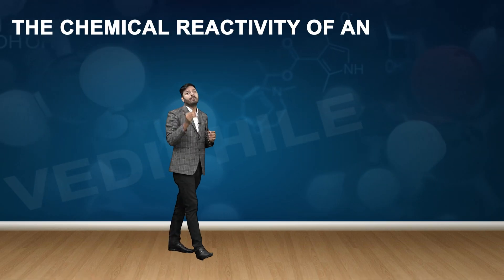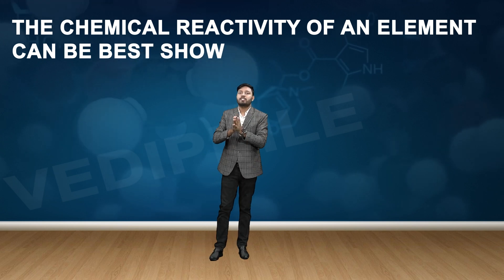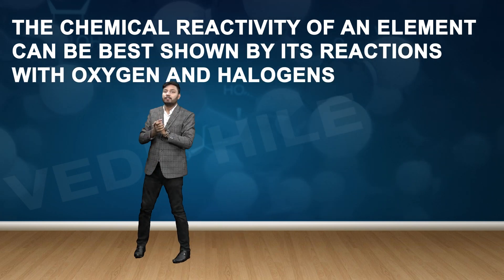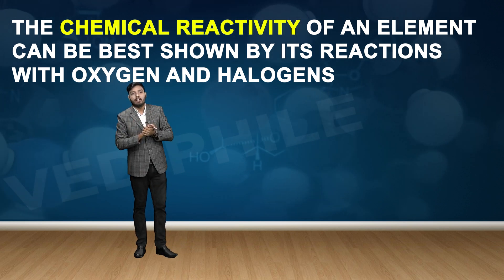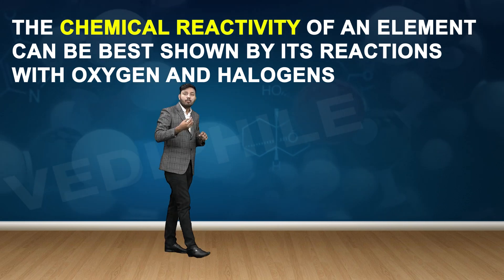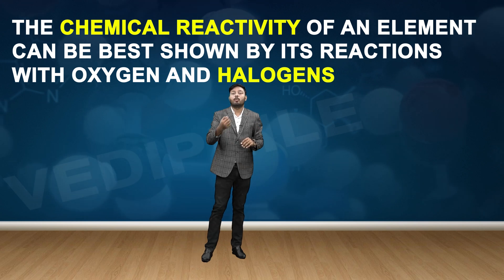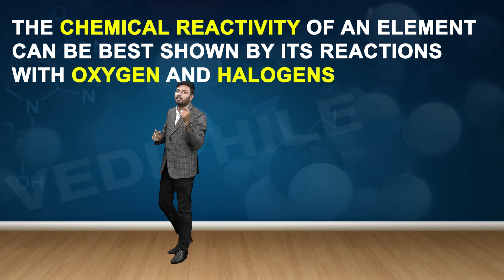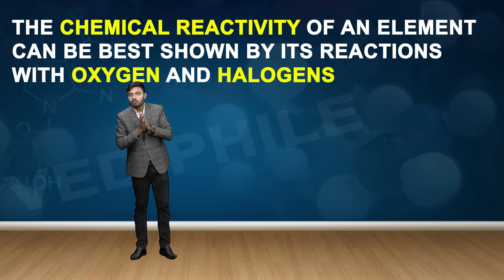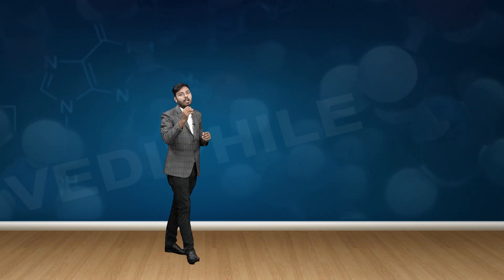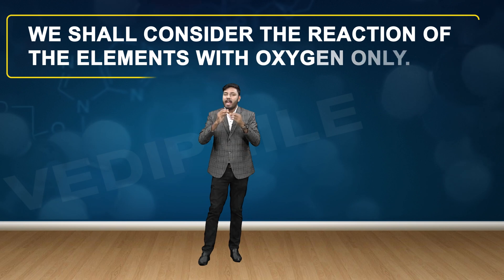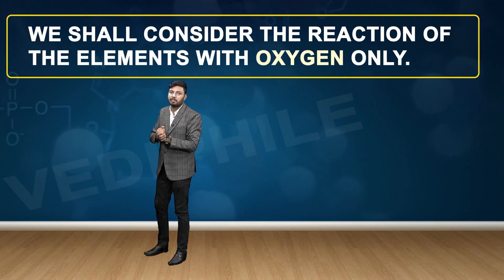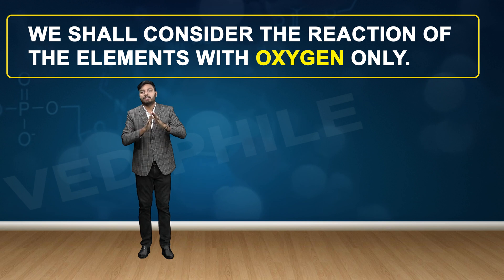The chemical reactivity of an element can be best shown by its reaction with oxygen and halogens. The best place to observe chemical reactivity is in reactions with halogens or with oxygen. We will first discuss reactions with oxygen; halogens will be covered individually in their respective periods.